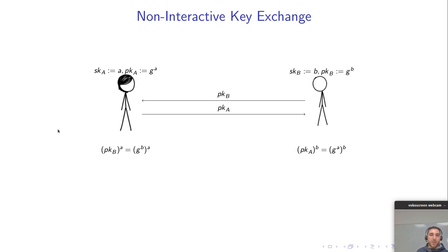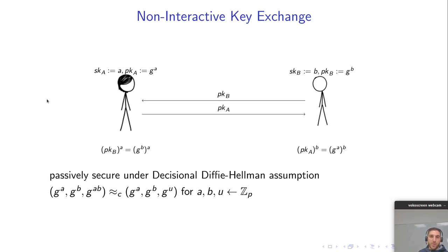The Diffie-Hellman key exchange is G to the AB and the Diffie-Hellman key exchange is passively secure under the decisional Diffie-Hellman assumption which states that G to the A given G to the A, G to the B and G to the AB